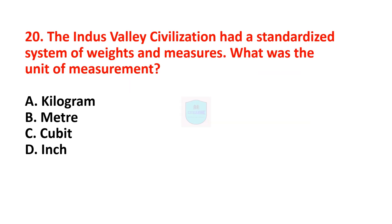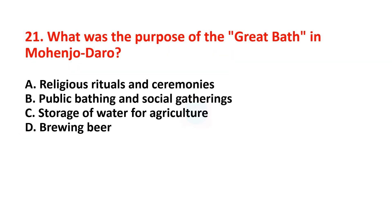Next question: the Indus Valley Civilization had a standardized system of weights and measures — what was the unit of measurement? Correct answer is cubit. Cubit was the unit of measurement during the Indus Valley Civilization. Next question: what was the purpose of the Great Bath in Mohenjo-daro? Correct answer is religious rituals and ceremonies. Religious rituals and ceremonies was the purpose of the Great Bath in Mohenjo-daro.